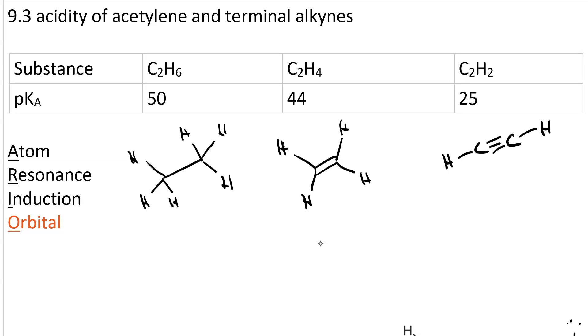First of all, you'll see that ethene is a million times more acidic. There's a pKa difference of 6.